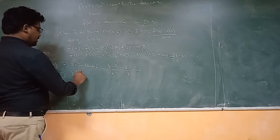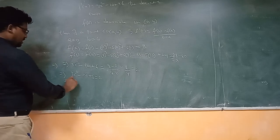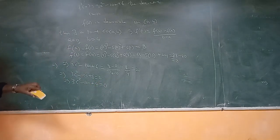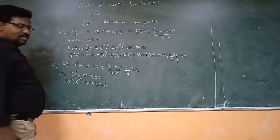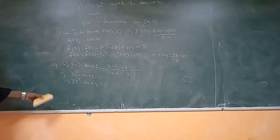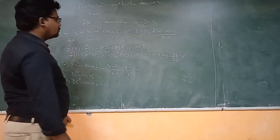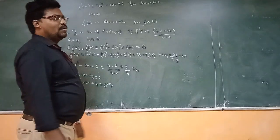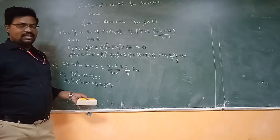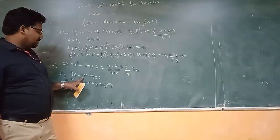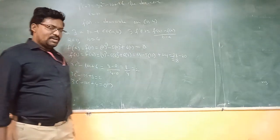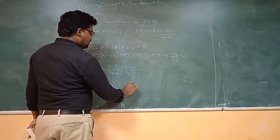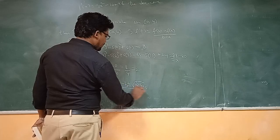So this implies 3c² − 10c + 6 = 2, which simplifies to 3c² − 10c + 4 = 0. Now we need to find the value of c. Using the quadratic formula c = (−b ± √(b²−4ac)) / 2a.